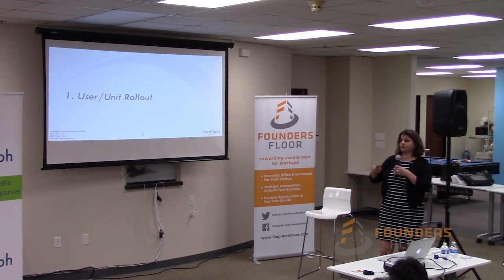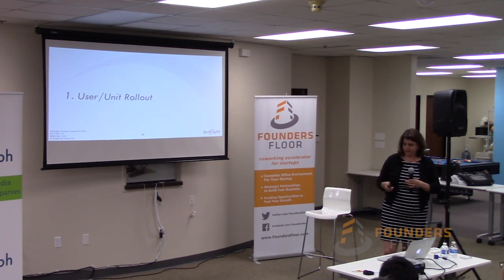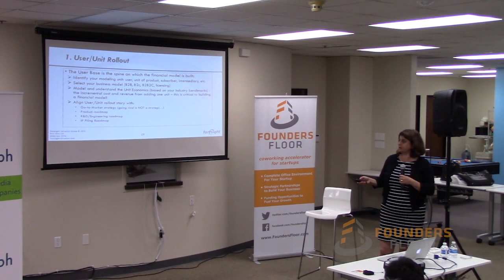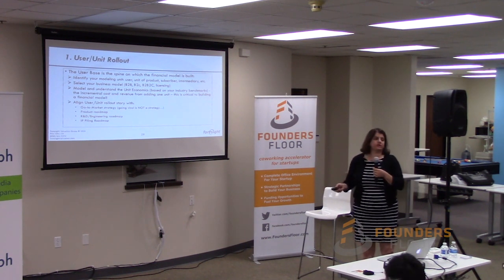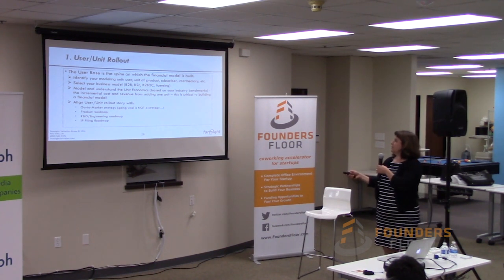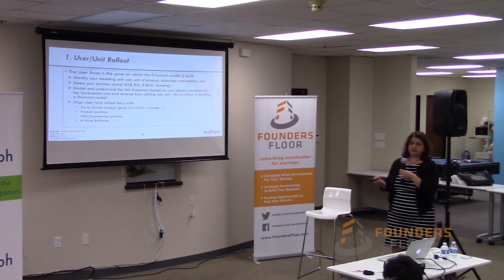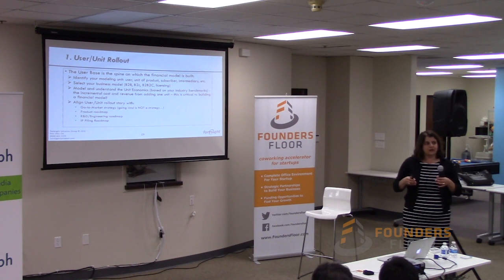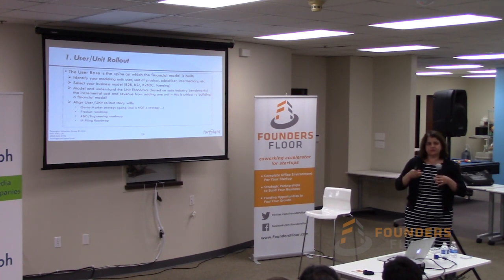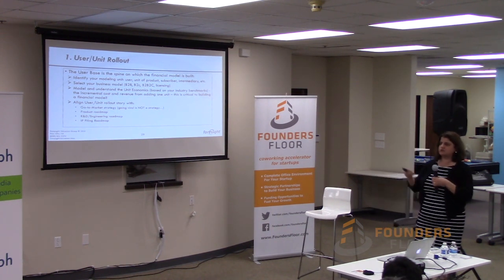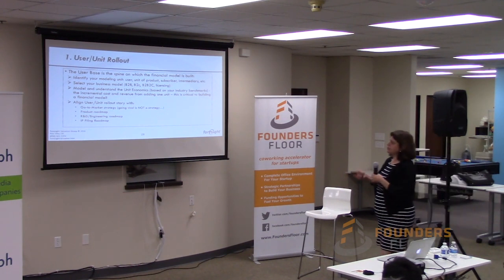So I call it a rollout because based on that you model your growth. There are a few best practices and then I'm going to show an example. When we talk about unit economics, the first thing is your units growth. You need to identify your modeling unit — whatever it is in your industry. It can be a user, a unit of product, a subscriber, a channel to market, what I call an intermediary. It can be a lot of different things — whatever it is that anchors your model. There are good common sense recommendations for most industries, and sometimes we have unique cases where we model something else.